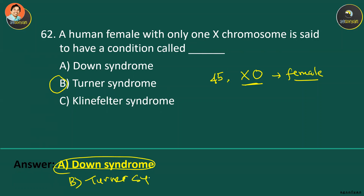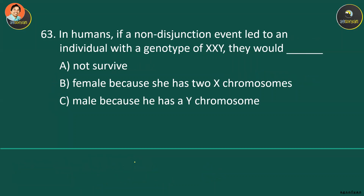In humans, if non-disjunction leads to an individual with a genotype of XXY, they would have Klinefelter syndrome. This happens when the X chromosome fails to separate during gamete formation in the mother, resulting in a child with an extra X chromosome. These individuals are alive and are male due to the Y chromosome.